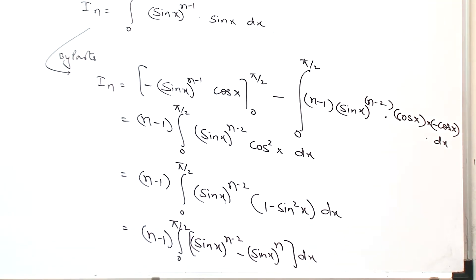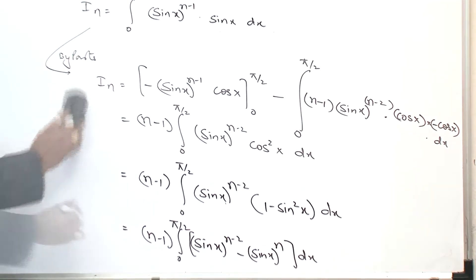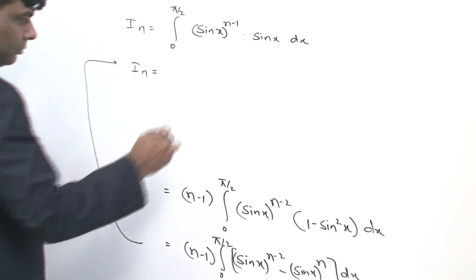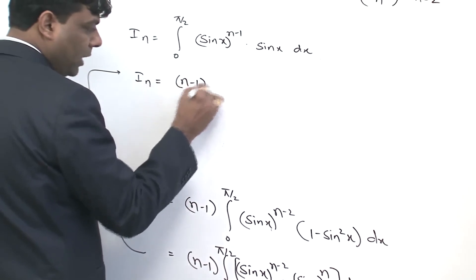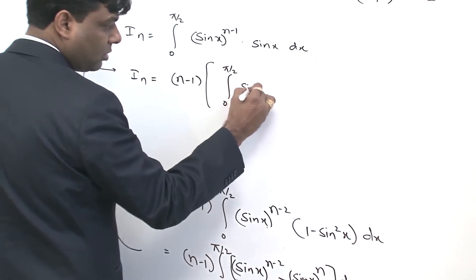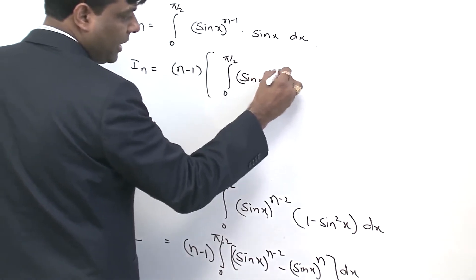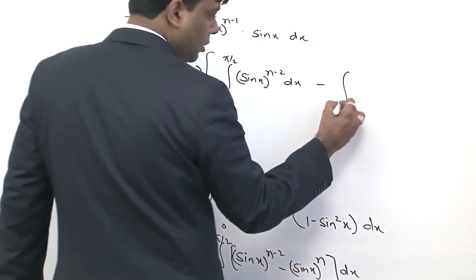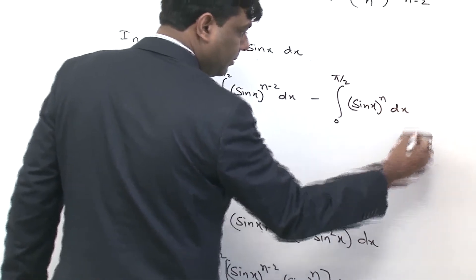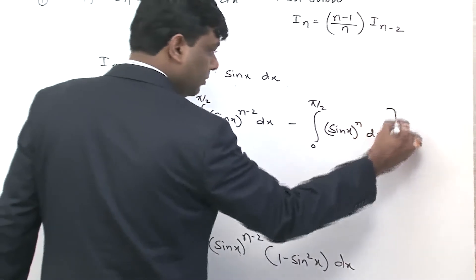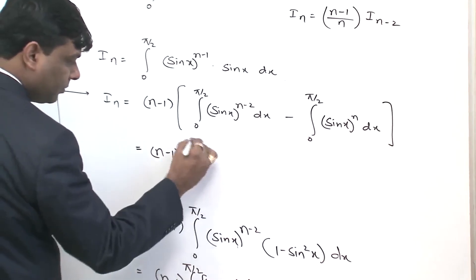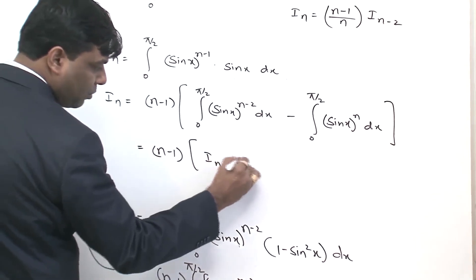Arranging this form, I_n will be equal to n minus 1 times the integral from 0 to π/2 of sin x to the power n minus 2 dx, minus the integral from 0 to π/2 of sin x to the power n dx. That is equal to n minus 1 times I_{n-2} minus I_n.